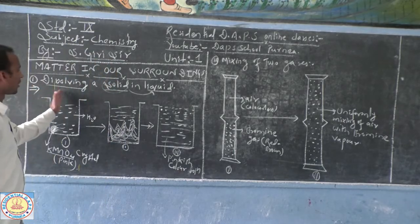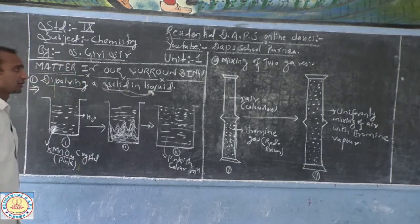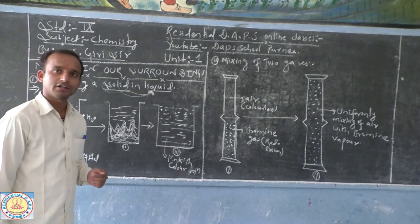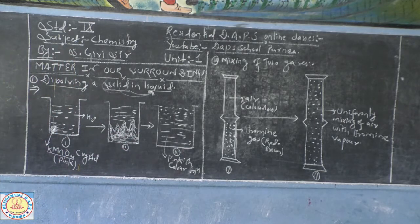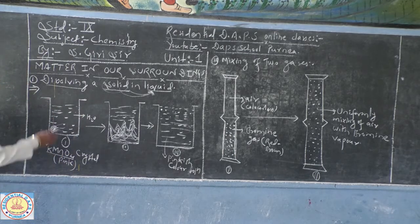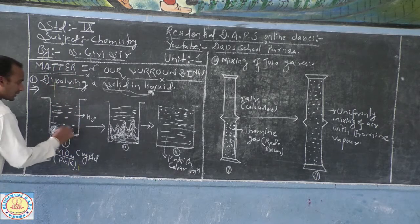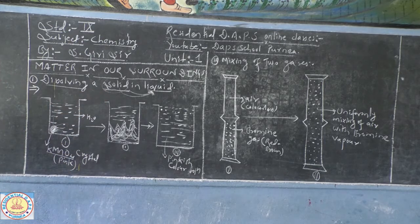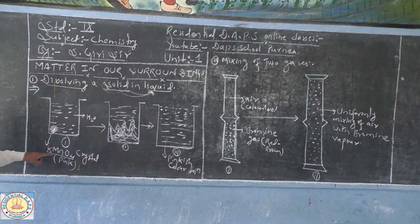In activity 1 it is shown here a solid is allowed to dissolve in liquid, how solid exactly dissolves in liquid and why it gets dissolved in a liquid. For this activity you need to take a beaker, fill the water as a liquid, and you have to take crystals of potassium permanganate.